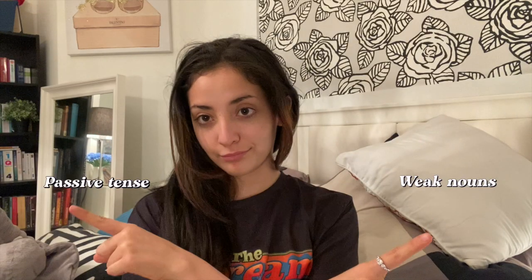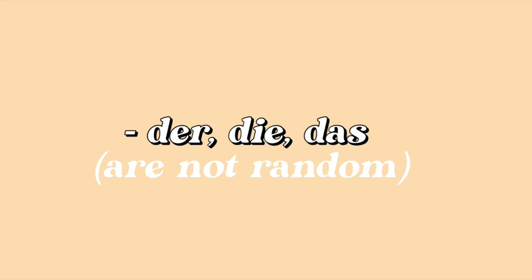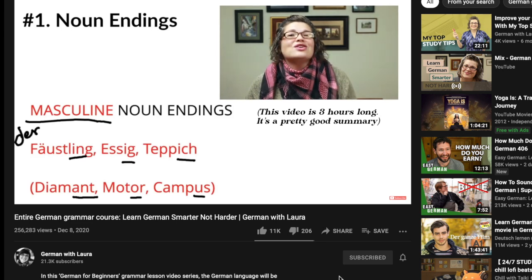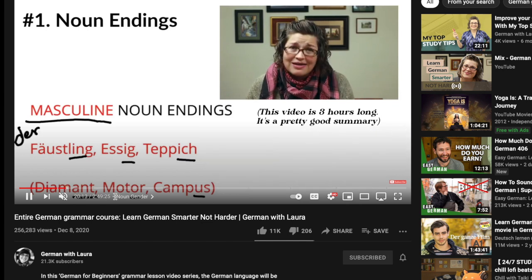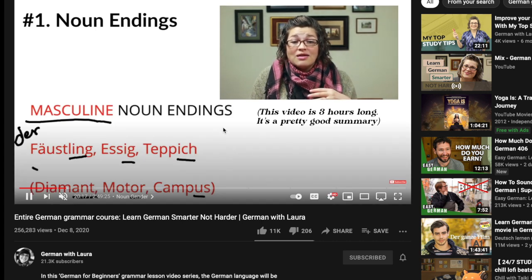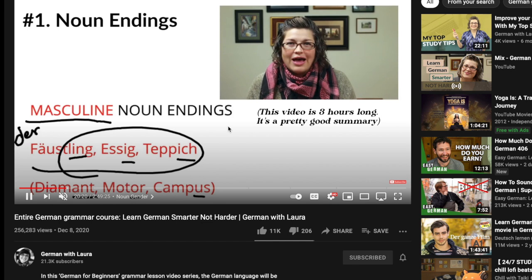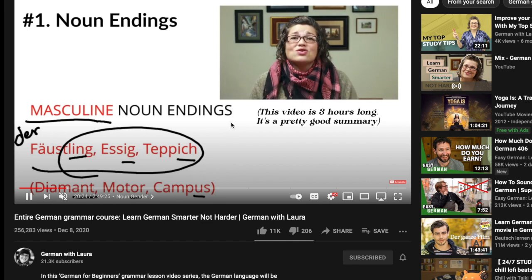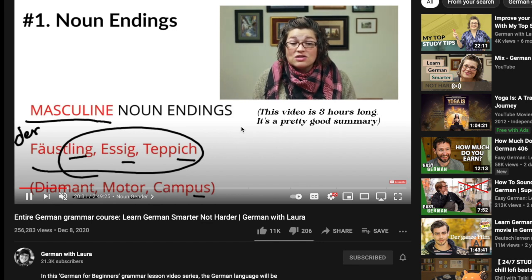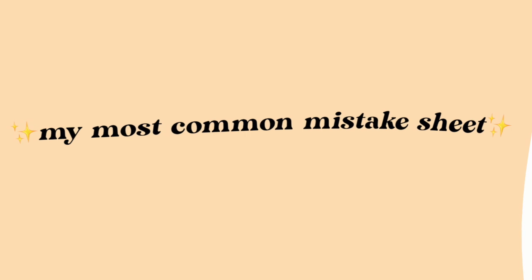For grammar I'm not following a textbook — I'm sensing what I'm most doubtful or hesitant about. For example, I was confused about German articles. My teachers told me that der, die, das were completely random, which is not true. I found a teacher on YouTube who has a free grammar course and explains that the articles follow a pattern — you can make an educated guess about which article a word takes. I've been watching her videos and I'll put her channel in the description.